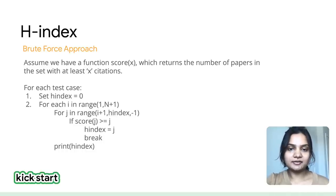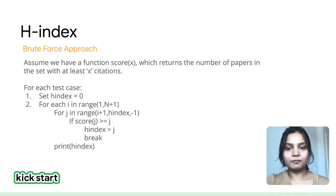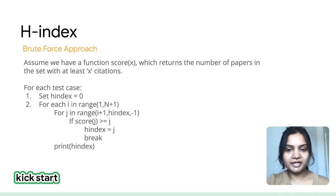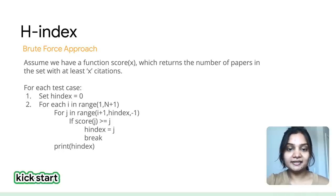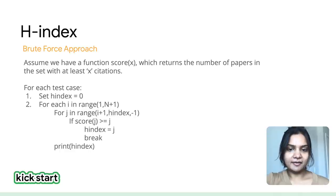Here is the pseudocode. Assume we have a function score(x) which returns the number of papers in the set with at least x citations. For each test case, set H-Index to 0. Iterate over N. Check for J values between i+1 (the number of papers published so far) and the current H-Index. Call the score function, and if score(J) is greater than or equal to J — meaning the number of papers with J citations is at least J — then update the H-Index value to J. This is a brute force approach; calculate its time complexity and think about what you can improve.